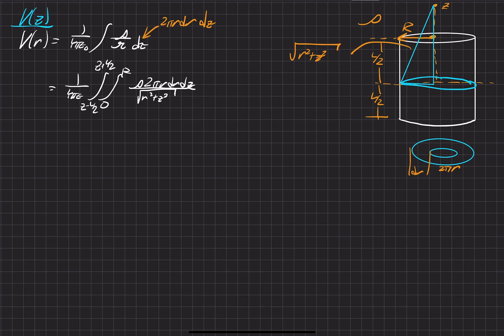And start integrating. We'll go ahead and begin by taking some of the constants and moving them out. Before that, I'm going to do some cleaning up. So what's left is rho over 2 epsilon naught, with the integral from z minus l over 2 to z plus l over 2, then r from 0 to R, of r dr over square root of r squared plus z squared, and then dz on the outside. So this is a much easier integral to solve.